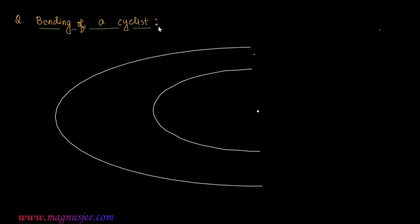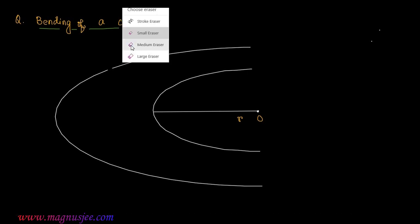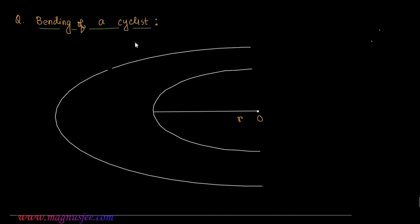Bending of a cyclist. This is a curved road where R is the radius of this curved road and O is the center. A cyclist will be taking a turn around this rough curved road along which we will analyze the forces.